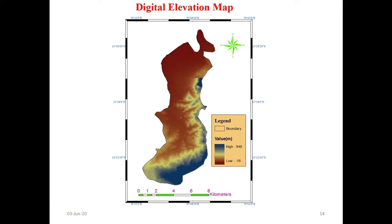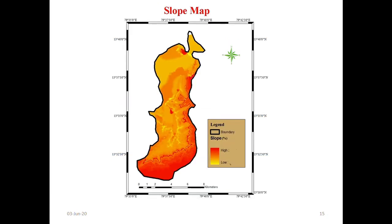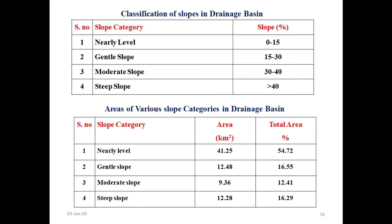The digital elevation map which is acquired from ASTER. Slope usually influences the runoff because greater the slope, maximum runoff; lesser the slope, lesser the runoff. These are the four classifications which I have classified: 0 to 15, greater than up to 40 which is steeper slope, and the areas have been classified.